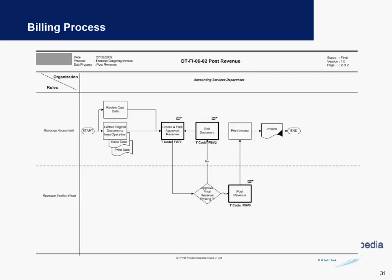What exactly is a billing process and who is involved? For a billing process you need a revenue accountant and a revenue section head. These are the important roles in an organization which help you post an invoice in the system. They are in charge of reviewing the cost data, reviewing the price data, and reviewing the original documents from the operation.